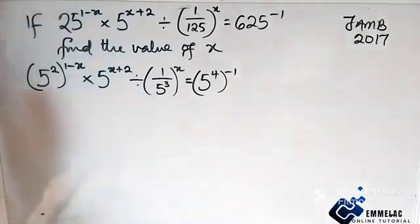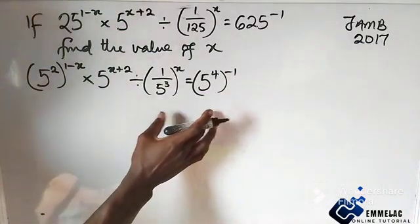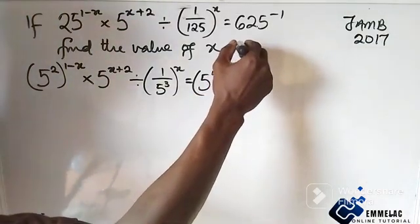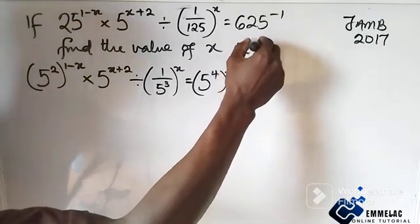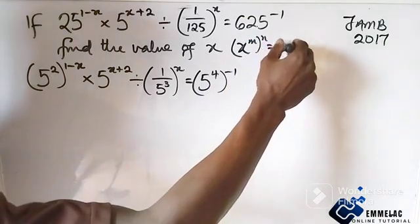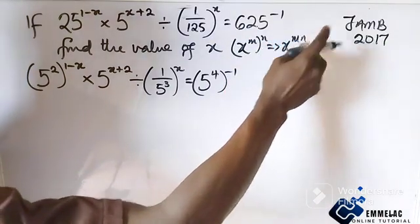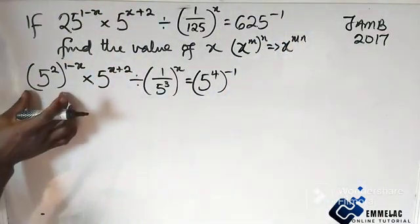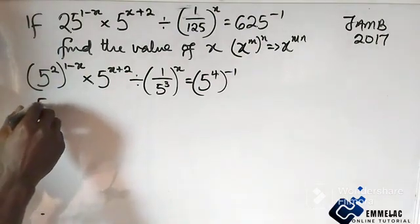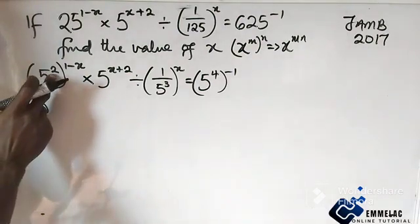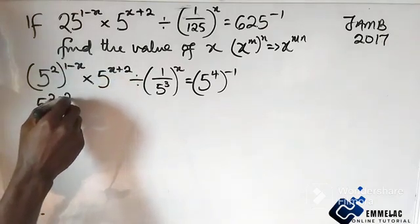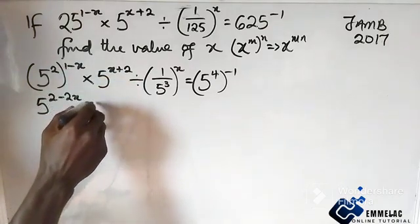So we've established that the right-hand side equals 5 raised to power 4. Now we recall the law of indices: x raised to power m, all to the power of n, equals x raised to power m times n — the product of the two. Applying that law here, we multiply 2 by the outer power.